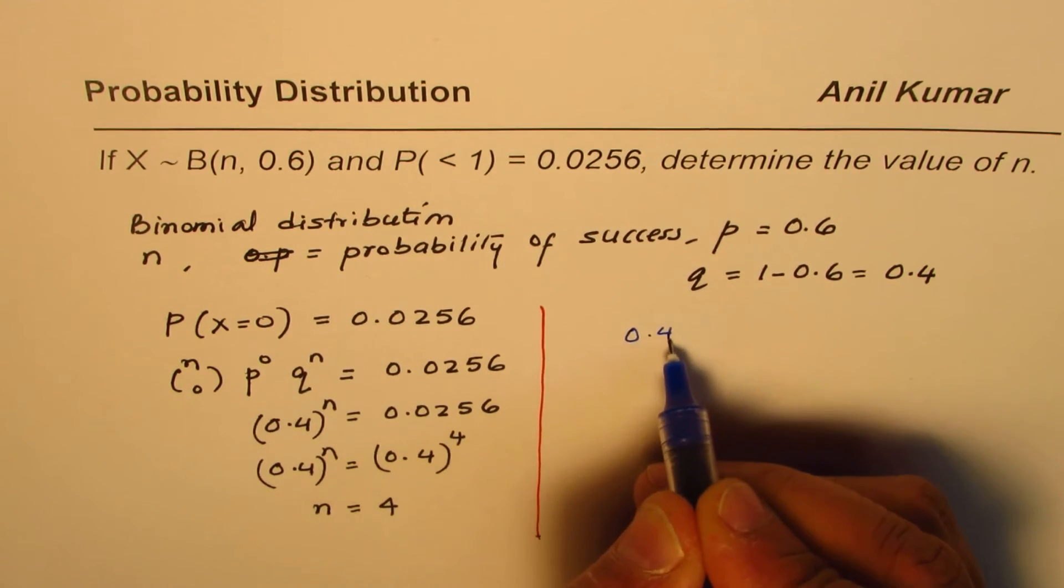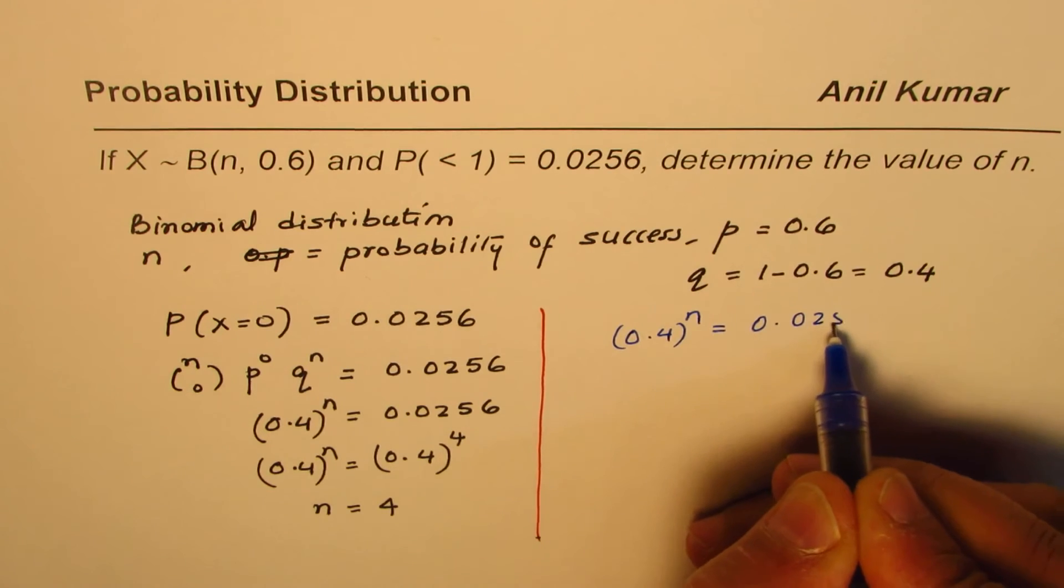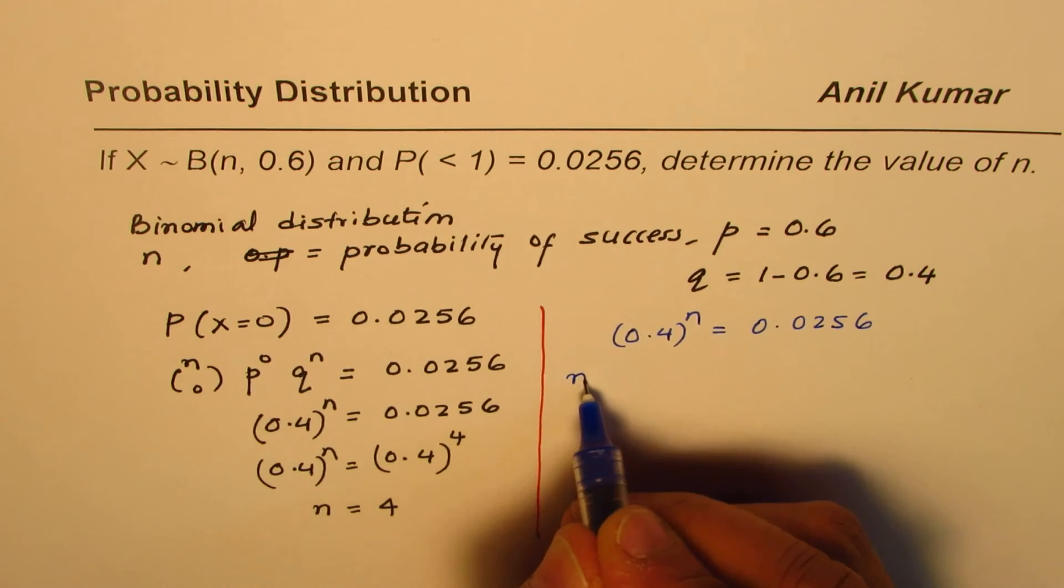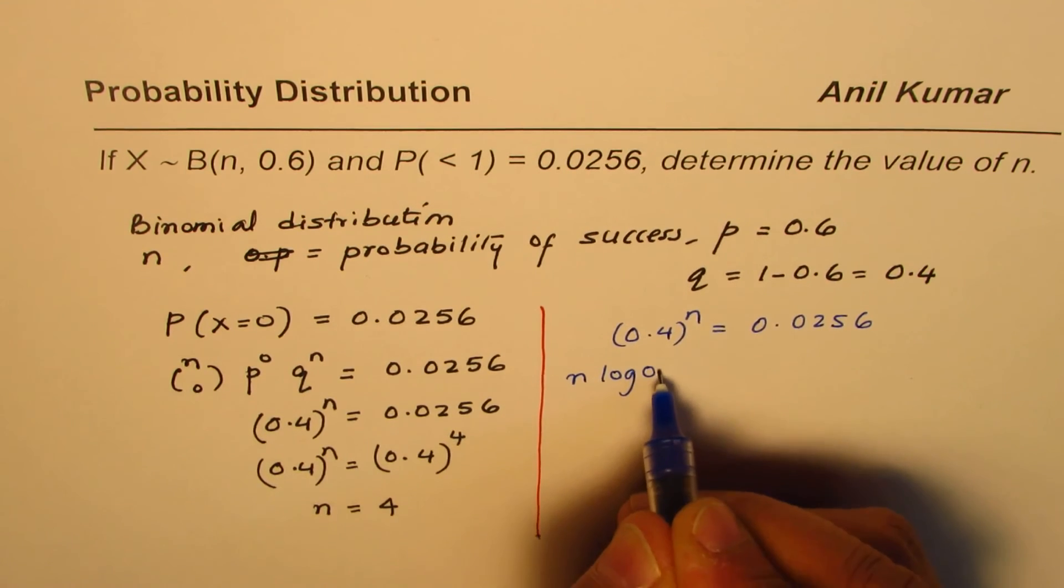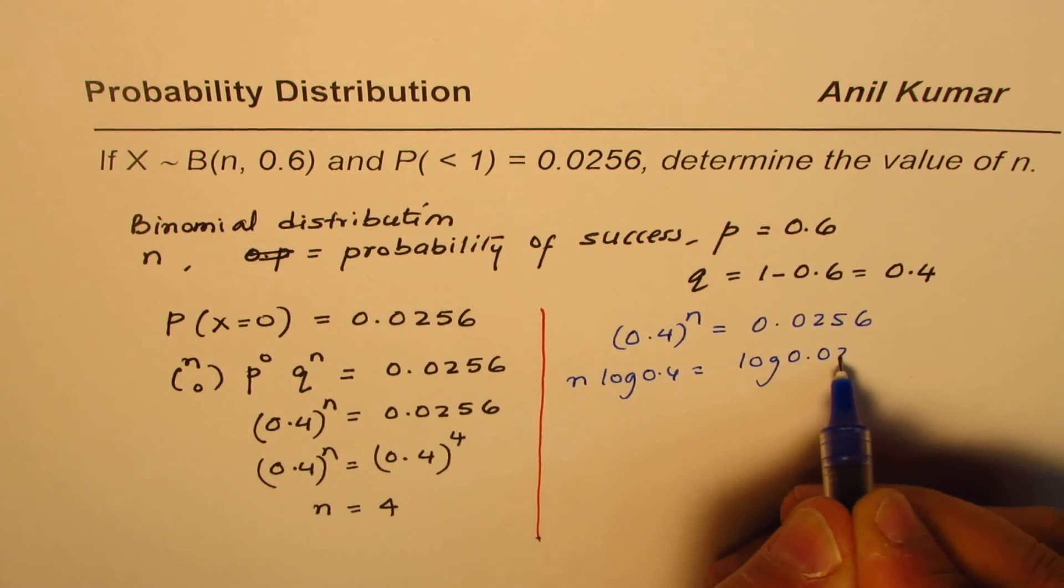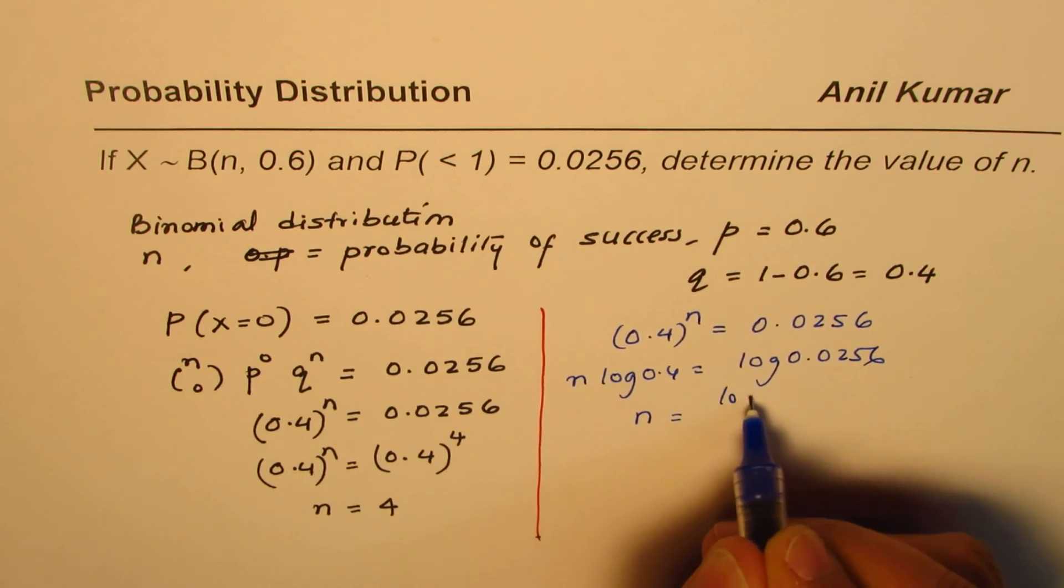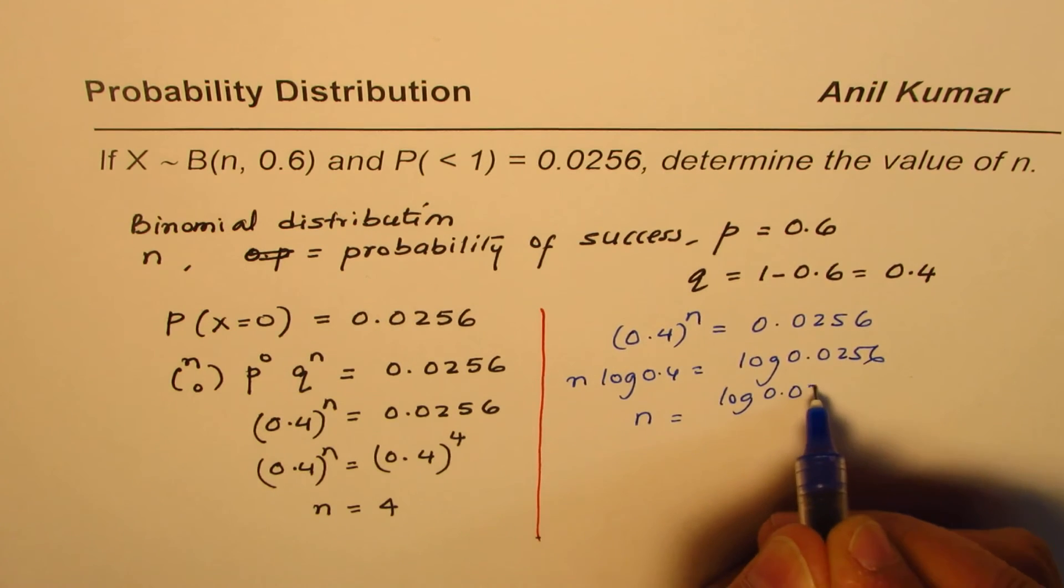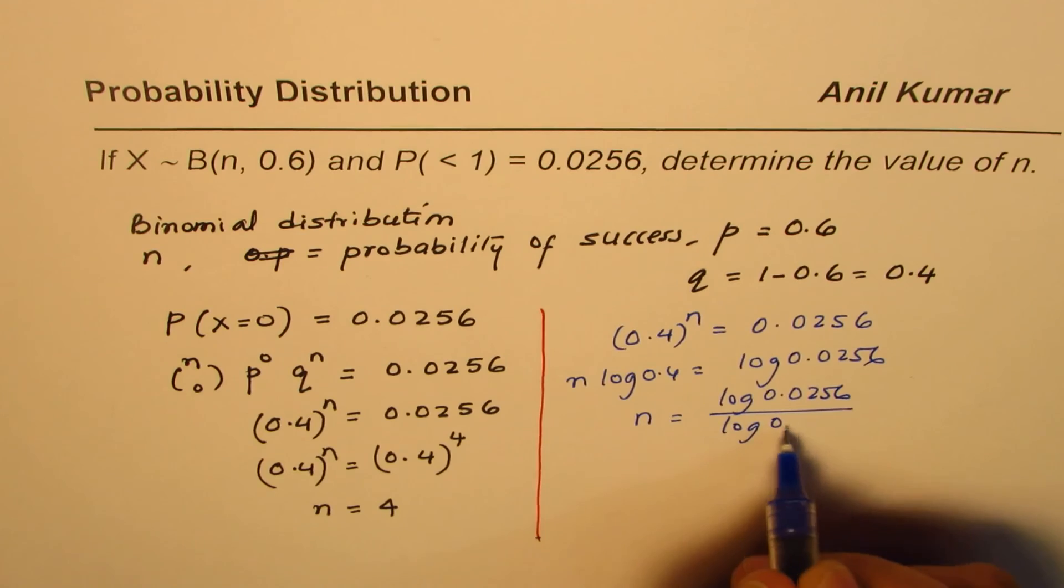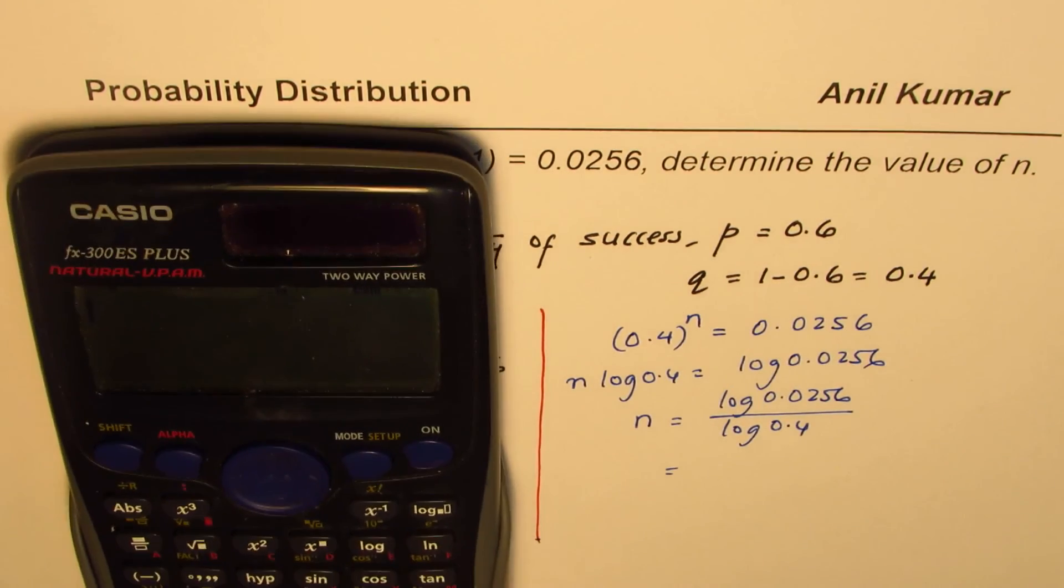Now, if you have this equation 0.4 to the power of n equals to 0.0256, general method to solve is to take log both sides. Then we get n log 0.4 equals to log of 0.0256, and you can find the value of n as ratio of log 0.0256 divided by log of 0.4.